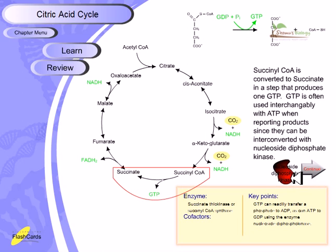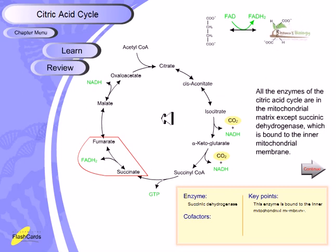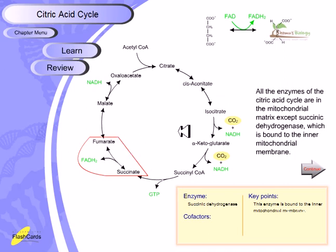Moving to the next step: succinate is converted into fumarate. This is also a dehydrogenase reaction, and the cofactor is FAD, which is reduced to FADH2. The enzyme responsible is succinate dehydrogenase. Importantly, all enzymes of the citric acid cycle are located in the mitochondrial matrix except succinate dehydrogenase, which is bound to the inner mitochondrial membrane — a very unique feature. This enzyme is also involved in fatty acid metabolism.